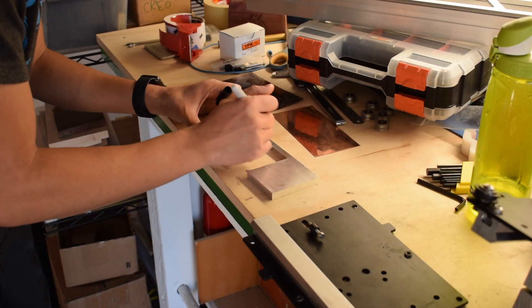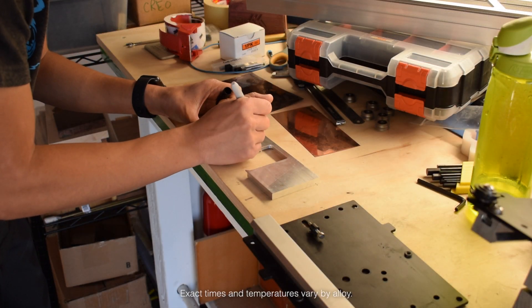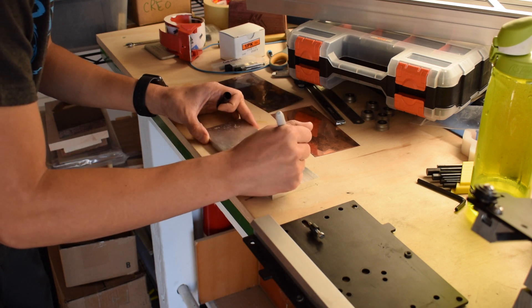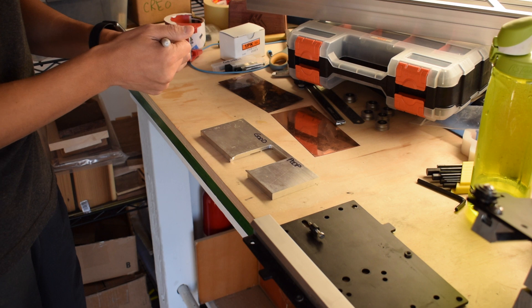To anneal aluminum properly, you need to hold it above 700 degrees Fahrenheit for two to three hours. What I'm doing here is only a partial annealing, but it will still be enough to illustrate some of the effects.